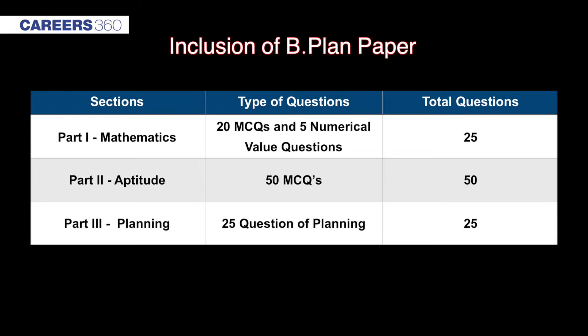The third and most important change is the addition of a new separate paper for the Bachelors in Planning course. Students seeking admission in the Undergraduate Planning course will now have to appear for a separate paper. This paper will have three parts: Part 1 consists of 25 Mathematics questions (20 MCQs and 5 numerical value answers); Part 2 is the Aptitude section with 50 MCQs; and Part 3 consists of 25 MCQs from Planning.